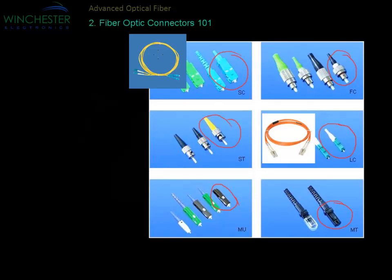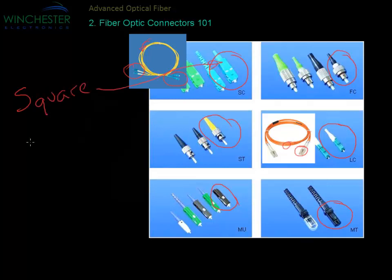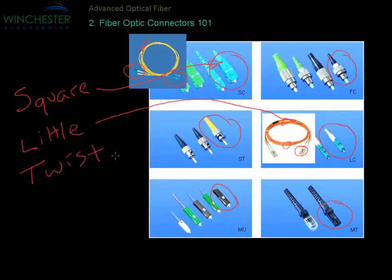Normally fiber connectors are purchased as patch cords. Fiber cables are normally purchased already assembled, rather than being assembled in the field, due to the precision required for polishing the end faces and the expensive equipment needed. You can remember the names because the SC is square, the LC is a little connector, and the ST is a twist style.